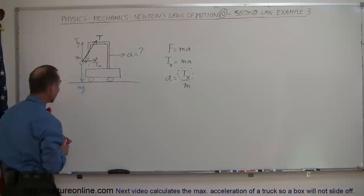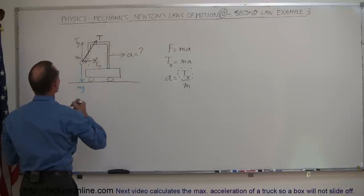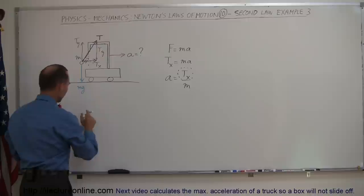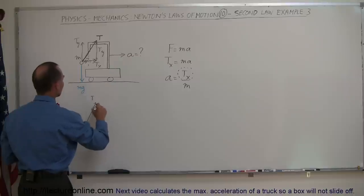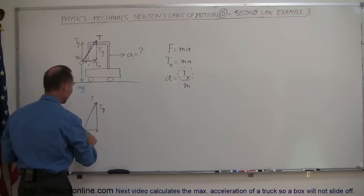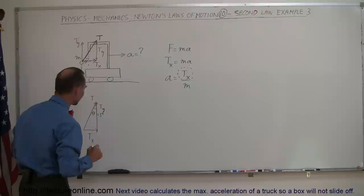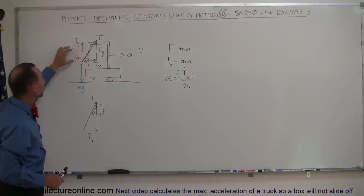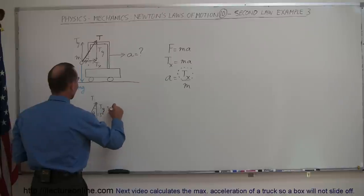We can move the force components to draw a right triangle. Transporting the triangle, we have the total tension as the hypotenuse, T sub Y as the vertical side, and T sub X as the horizontal side. The angle theta equals three degrees. From Newton's second law, since T sub Y equals MG in magnitude, we can replace T sub Y with MG. So the vertical side of our triangle is MG.